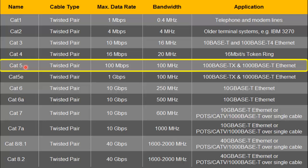All these LAN cables are four twisted pairs. For category 5, the maximum data rate is 100 megabits per second and the maximum bandwidth is 100 megahertz. All of these cables are used mainly for Ethernet purposes.